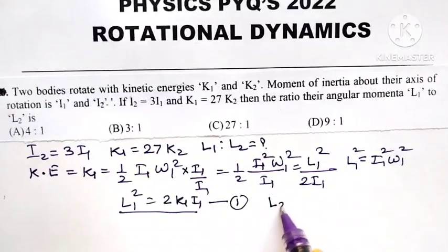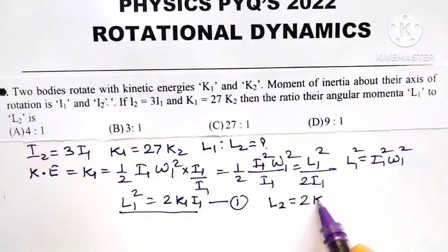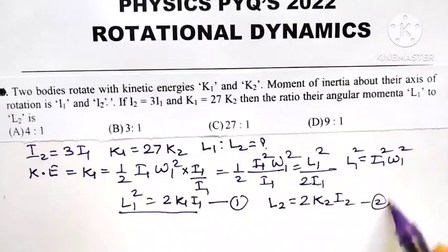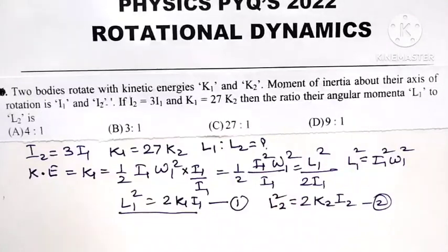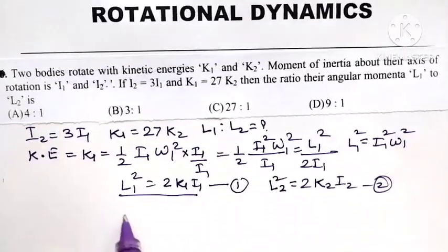Similarly, for second body L2 square equals 2K2 into I2. This is equation number 2. Now let us take the ratio of L1 square upon L2 square.